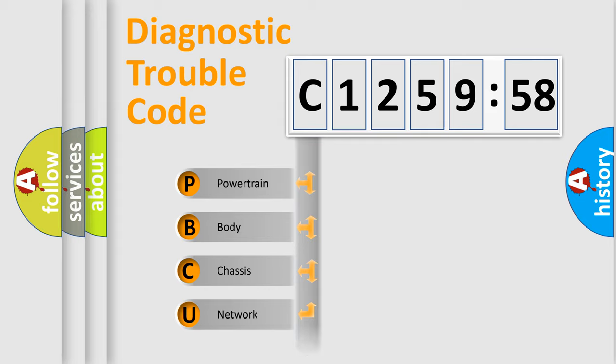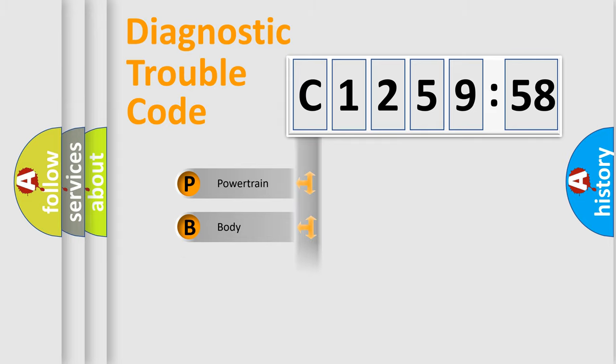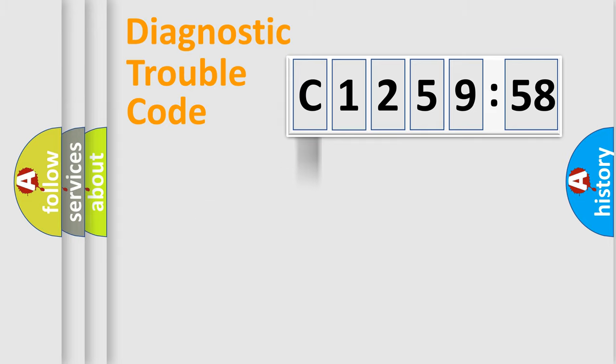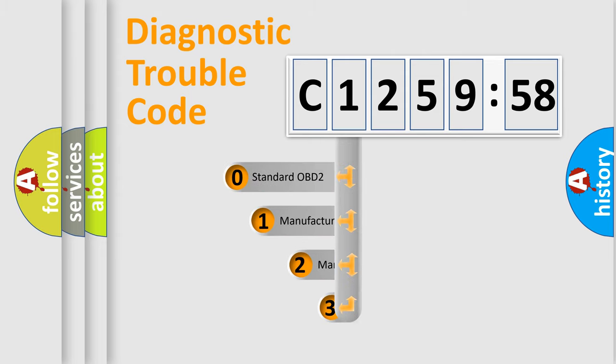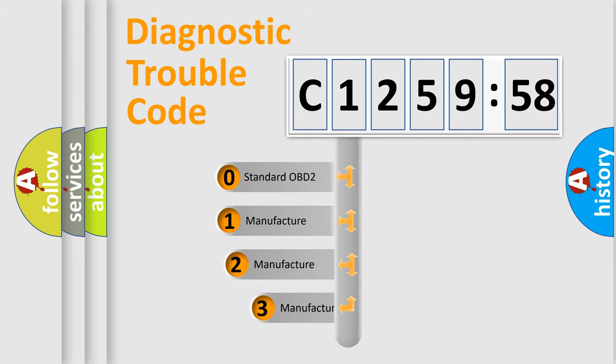We divide the electric system of an automobile into four basic units: Powertrain, Body, Chassis, and Network. This distribution is defined in the first character of the code.